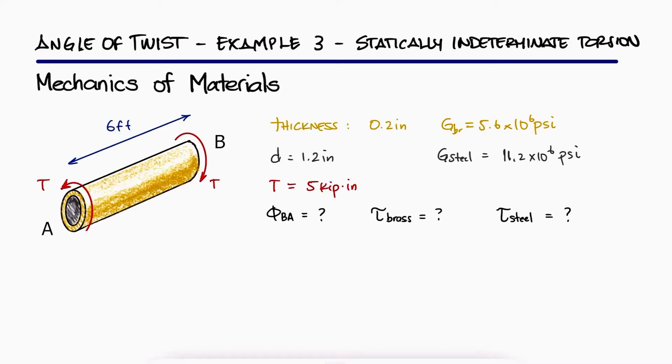We know that part of the external torque will go into the brass jacket and part will go to the steel core, so we have two unknowns with only one equation. These statically indeterminate problems can be solved when we add information about the deformation, in this case the angle of twist.